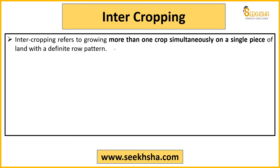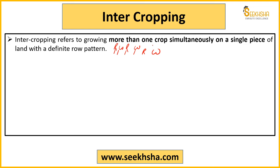For example, an alternating crop row pattern could be: first row rice, second row wheat, third row rice, fourth row wheat, and so on. You can also follow other ratios — for example, a 5:1 ratio where there are 5 rows of one crop followed by 1 row of another crop, then again 5 rows of the first crop and 1 row of the second.